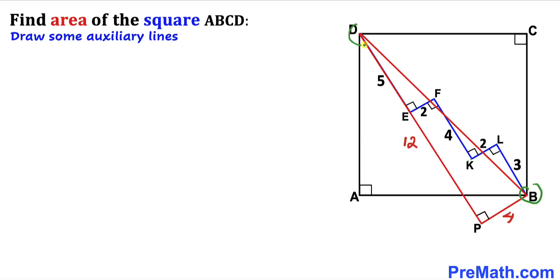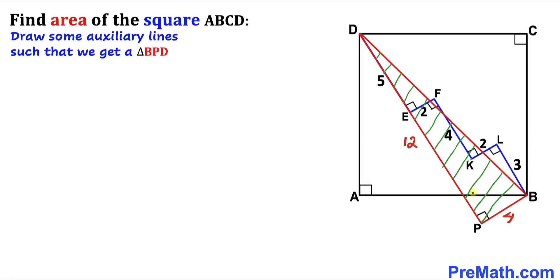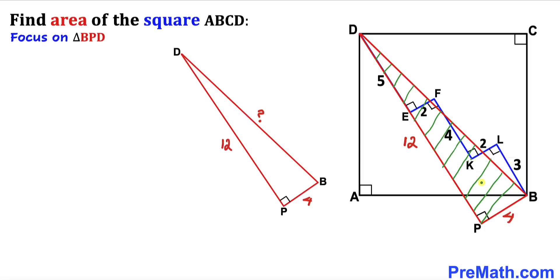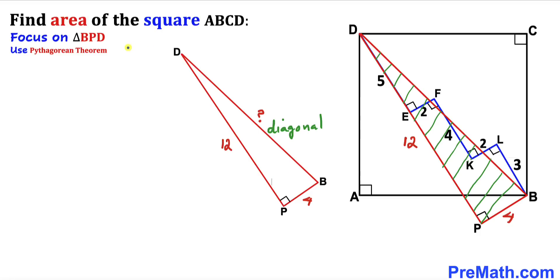Line segment PB is going to be 4 units. We also connected vertices B and D, and as a result we got right triangle BPD. Let's focus on right triangle BPD — side length PD is 12 units and side length PB is 4 units — and now we are going to calculate diagonal BD.